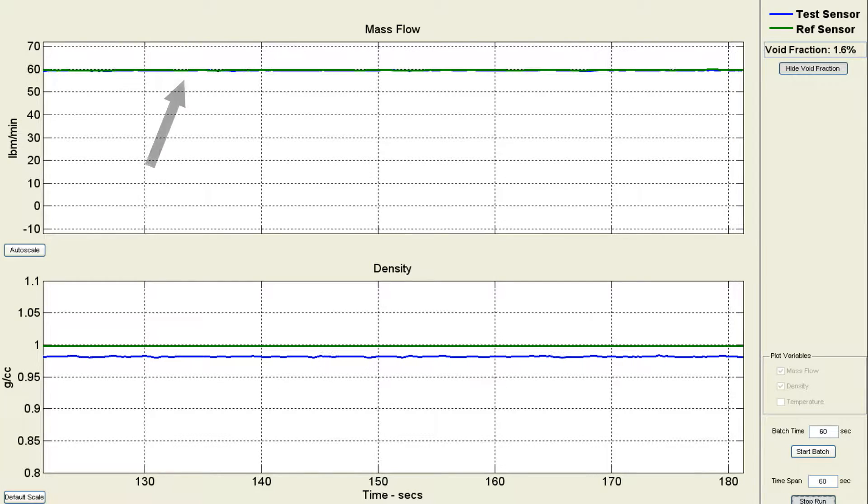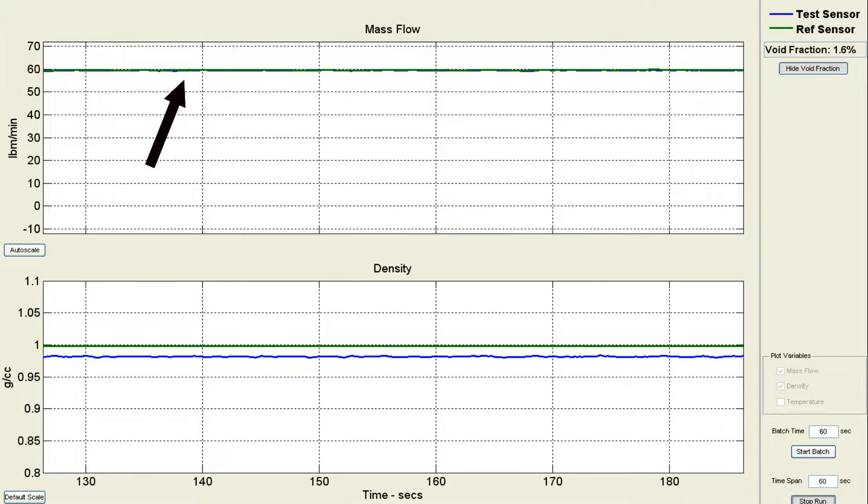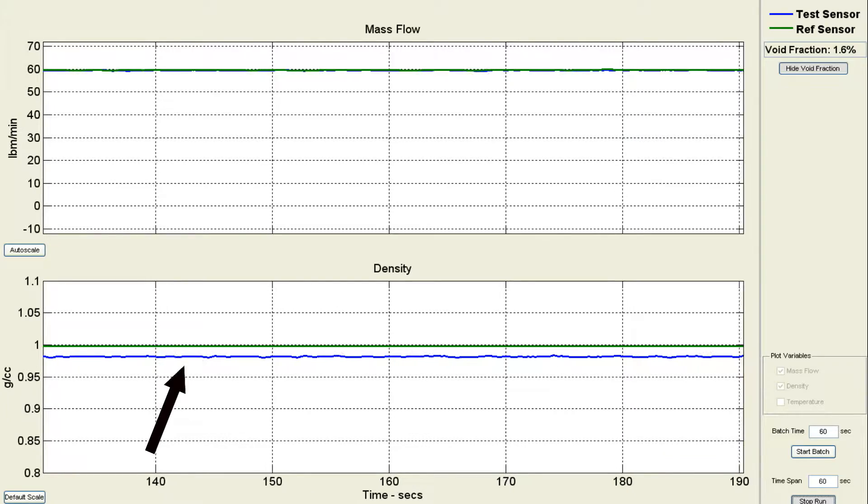As you can see, the mass flow rate of the mixture is very close to the mass flow rate of the liquid. The density of the mixture, however, is much lower than the density of the liquid.